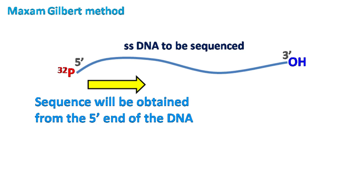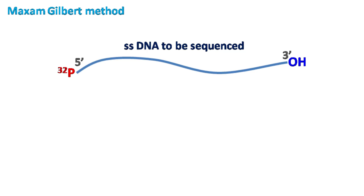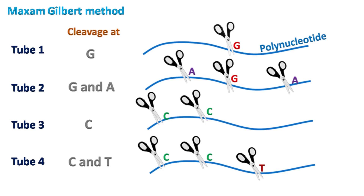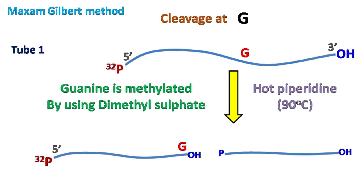The next step involves cleavage of the polynucleotide chain at specific bases. For this purpose, the polynucleotide chain is divided into four tubes. Each tube contains reagents that cleave the chain at a specific site: G, G+A, C, and C+T. For cleavage at G, the guanine is methylated by dimethyl sulfate.